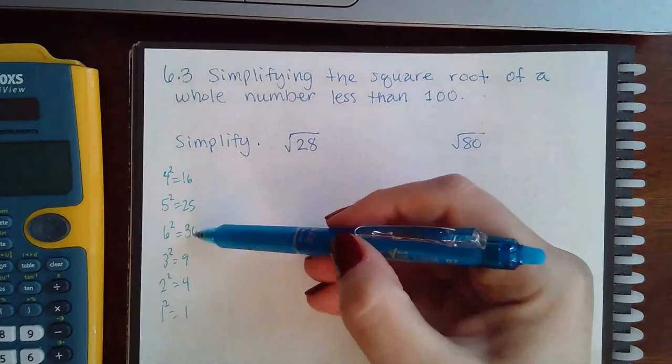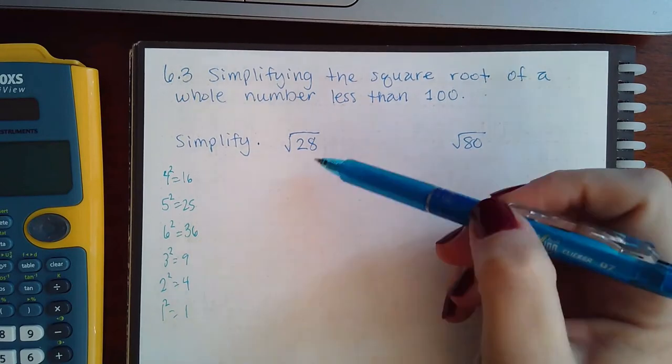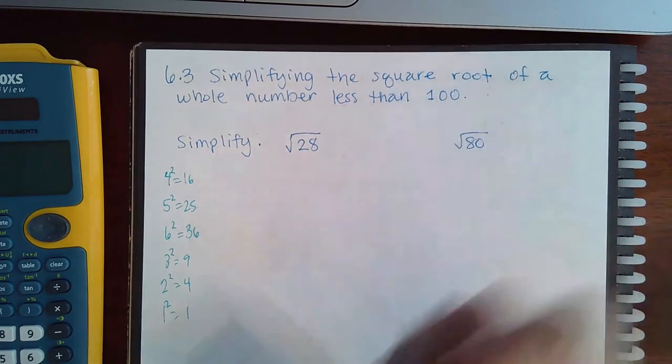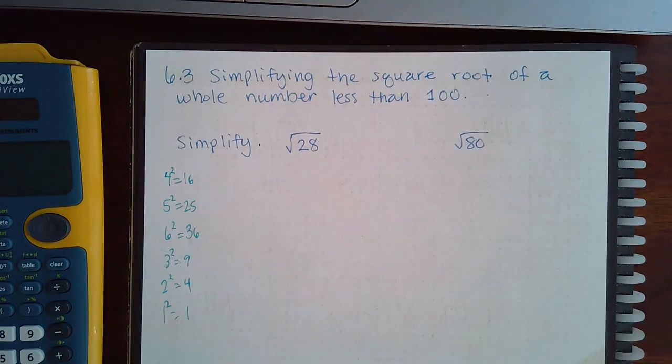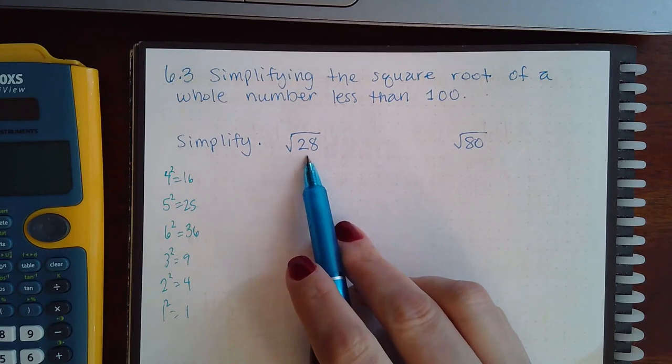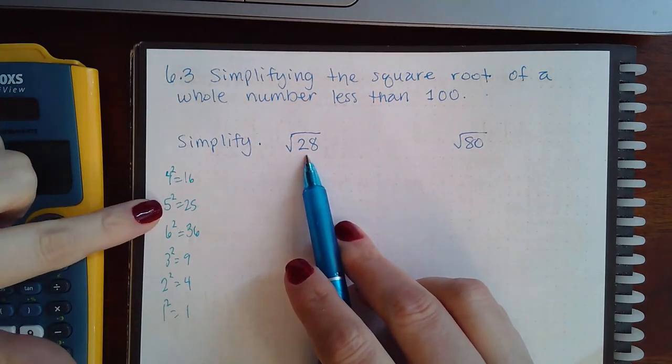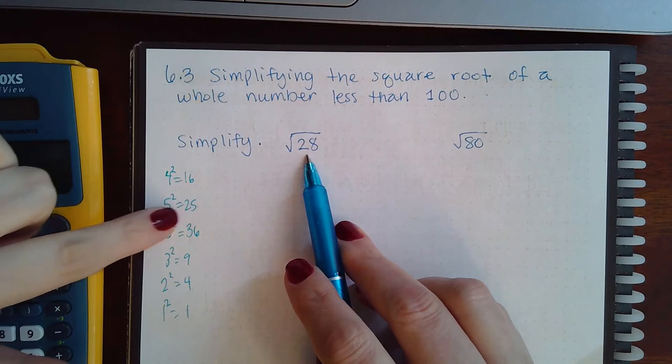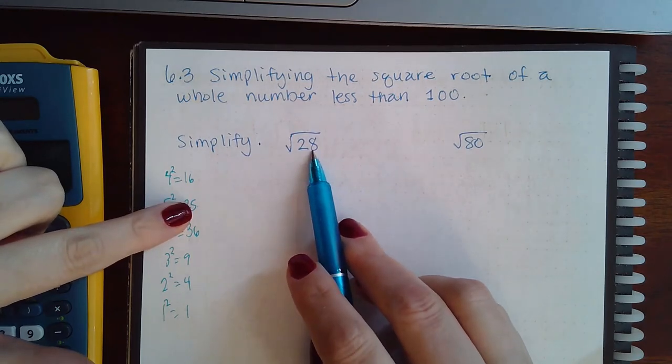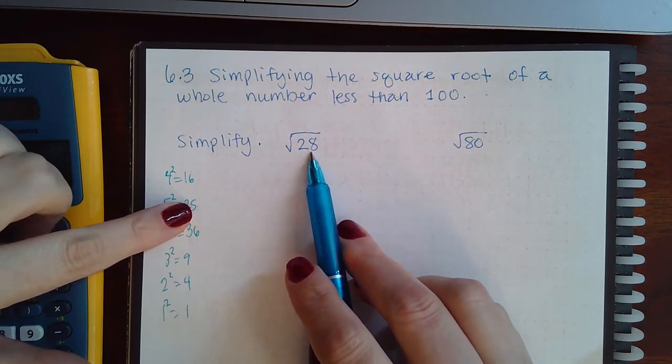It jumps right over from 25 to 36, so there's no perfect square for 28. But you may be able to write 28 as a product of two numbers where one of them may be a perfect square. You take the largest perfect square that will divide evenly into this. It has to be something smaller than 5 because 5 times 5 gives me 25.